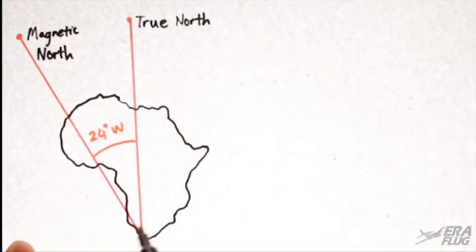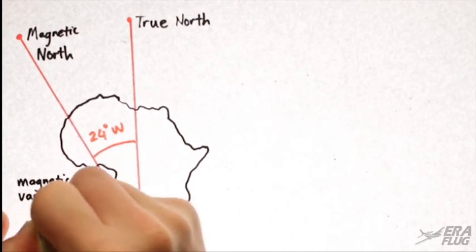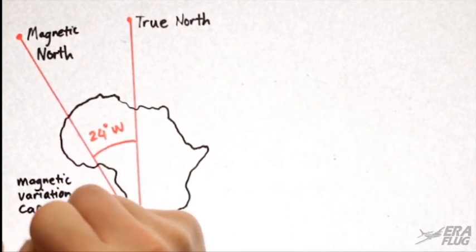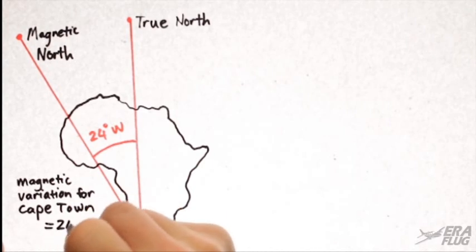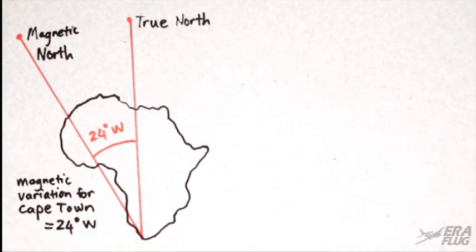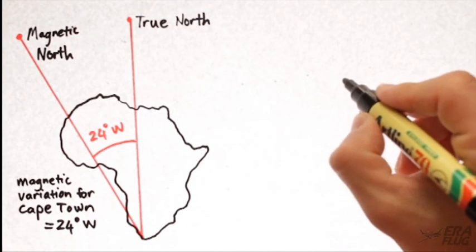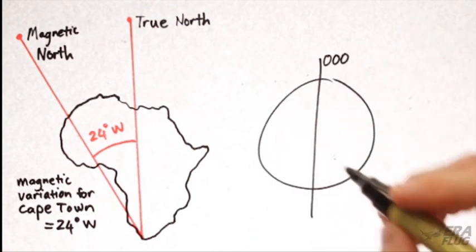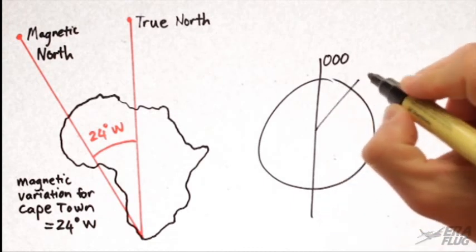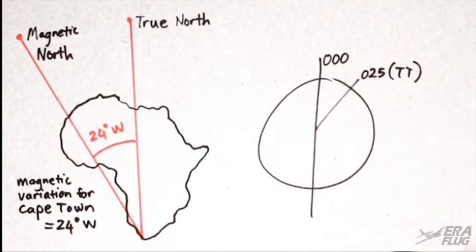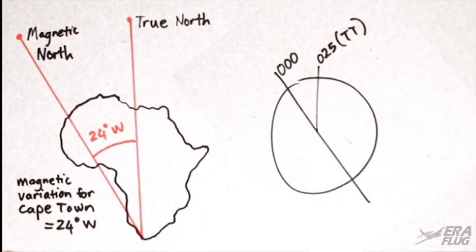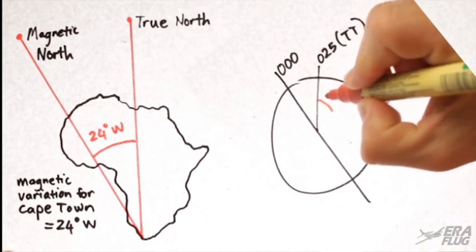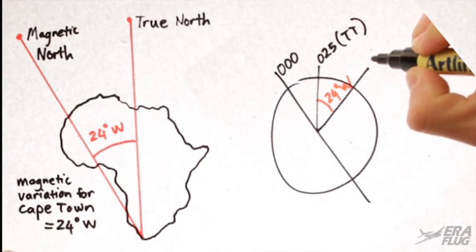Therefore, to calculate our magnetic track, we need to add our magnetic variation to true track. For example, let's take a true track of 025. We'll add Cape Town's variation, which is 24 degrees west, and we arrive at a magnetic track of 049.